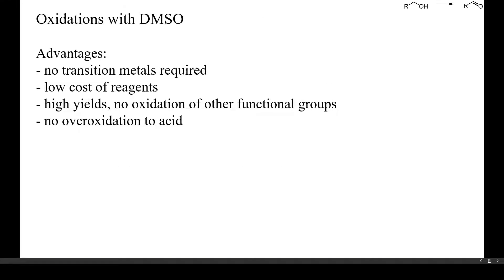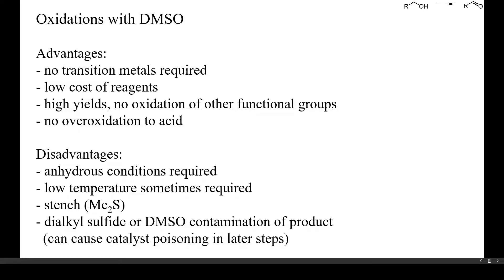The main advantages of alcohol oxidations with DMSO are that no transition metals are required and that the reagents are inexpensive. Yields are often high and other functional groups are usually not oxidized. Over-oxidation to carboxylic acids isn't a common side reaction either. The main disadvantages are the anhydrous reaction conditions and low temperatures sometimes required. The stench can also be a problem.